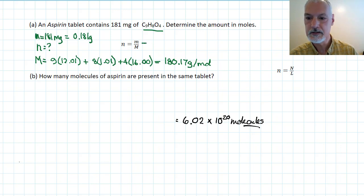So, putting in our numbers, we have 0.181 grams on the top. One mole weighs 180.17. Solve, and with three significant digits, I'll put the zeros in that should be there, and I get the number of moles.